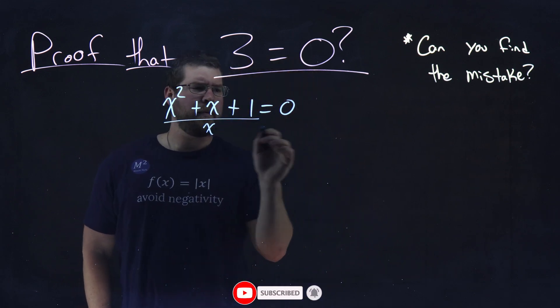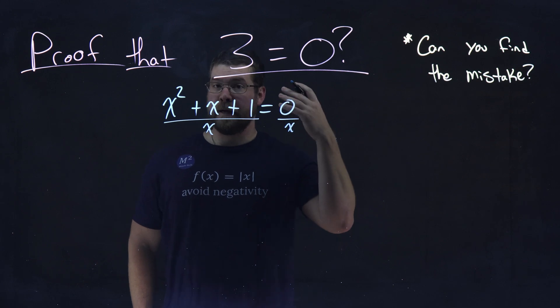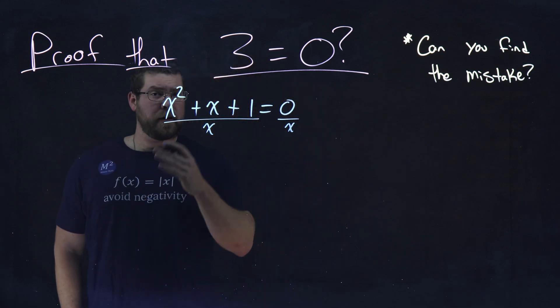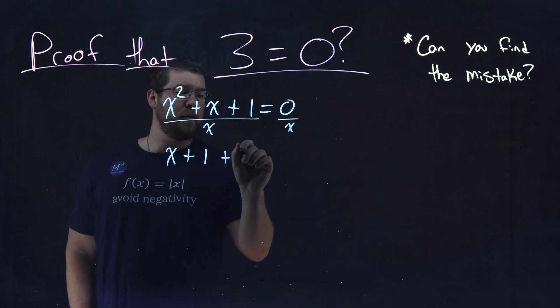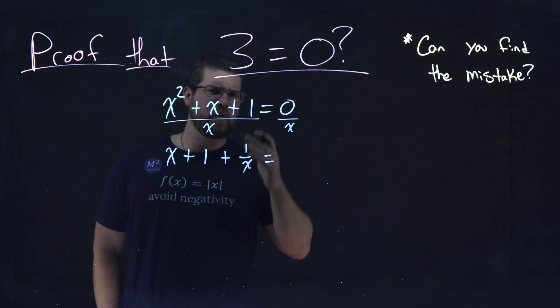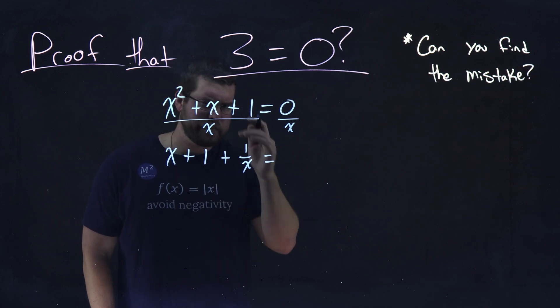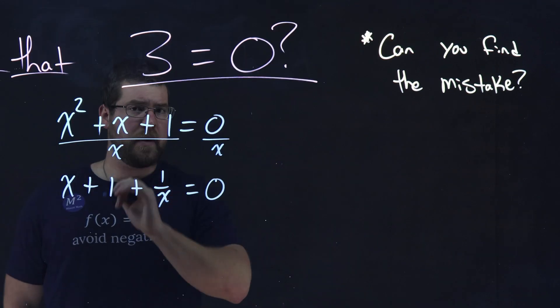Divide the left-hand side by x and the right-hand side by x. The left-hand side becomes very simple: x + 1 + 1/x equals, well, 0 divided by x is 0. Not too bad.